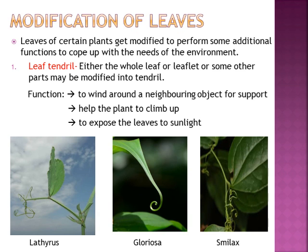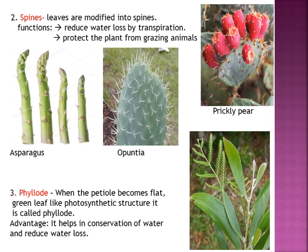The next modification is spines. Leaves are modified into hard pointed spines to reduce water loss. For example, in rose, the spines are actually thorns — thorns are broader and only for protection against grazing animals. But spines are different: they are very thin and pointed structures. Leaves get modified into spines specifically in desert plants where very little water is available.